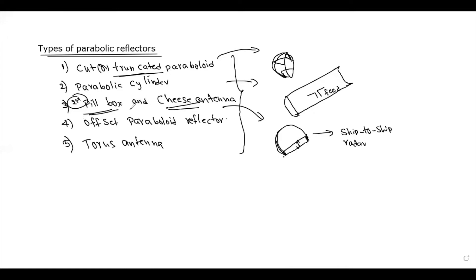The Pillbox antenna and the cheese antenna have similar applications. The cheese antenna is also called a reflector antenna. It is similar to the parabolic reflector and is also a cylindrical reflector, the same as the Pillbox antenna.